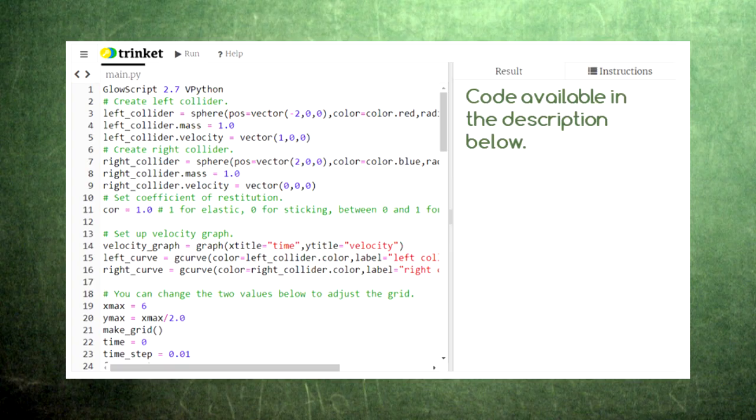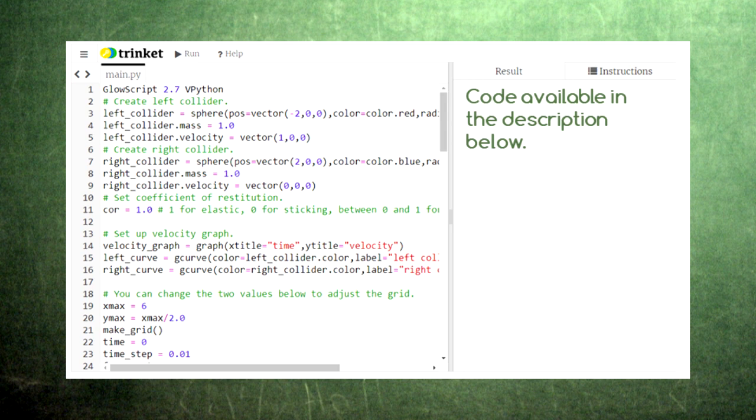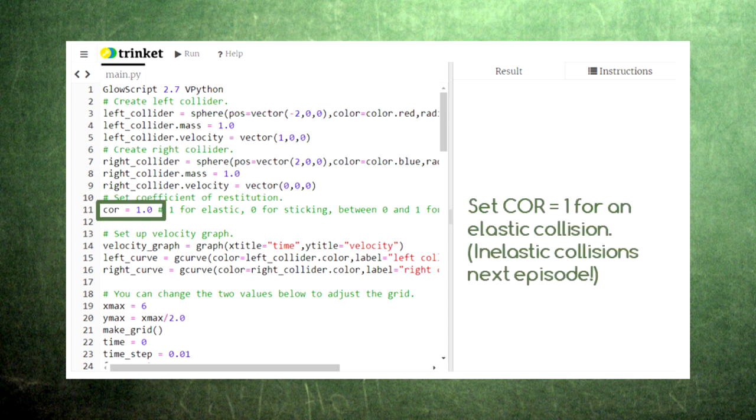This code generates two colliders and then takes them through the three phases of a collision. First, we give each collider a mass and an incoming velocity. Then, we set the coefficient of restitution. In this video, we'll keep the coefficient set to one to create elastic collisions.